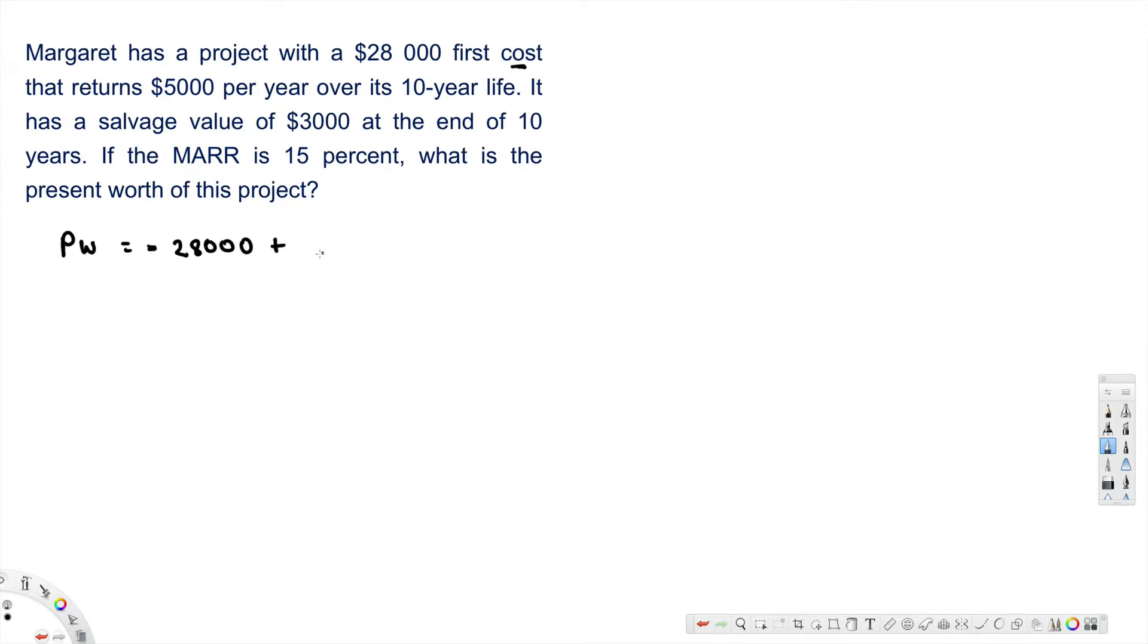$5,000 per year for 10-year life. The question is asking for present worth, so this is P/A at 15% for 10 years. And they have also mentioned $3,000...